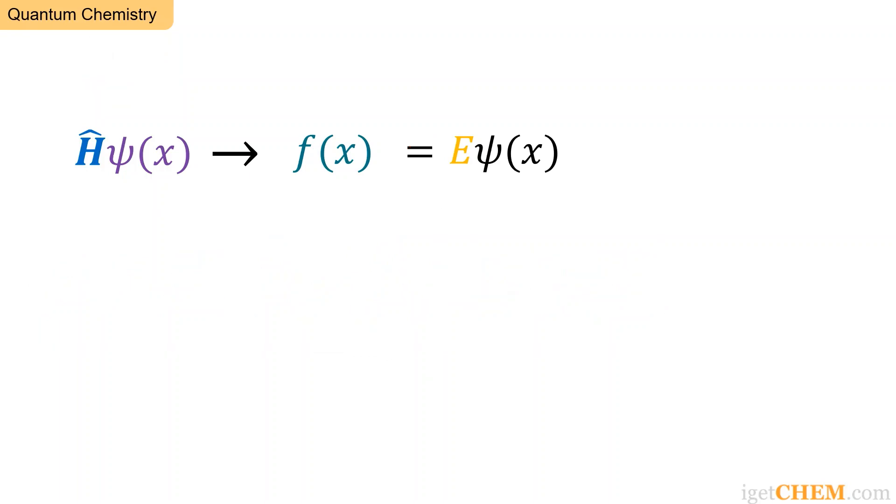It turns out that for each operator H that satisfies a certain mathematical requirement called Hermitian, you can always find a special set of functions psi that when operated on by H would give you back the same function multiplied by a number. These special functions are called eigenfunctions of the operator H.